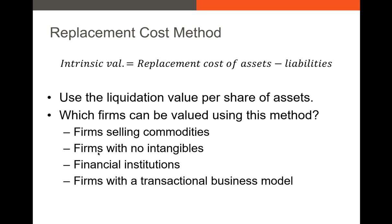There are a lot of other issues with this method, and the biggest one is that it's really only appropriate if your firm has no intangibles. If the firm has intangibles, there may be some intangible value that won't show up in the replacement cost of the assets. A lot of the firms valued using this method are financial institutions — a brokerage firm or a traditional commercial bank. But if you've got a firm with a lot of intangible assets, like Apple with trademarks and patents, this is not the method you'd want to use.